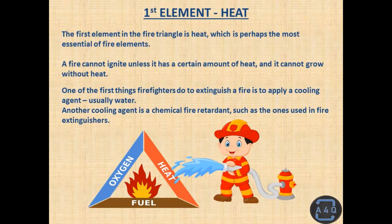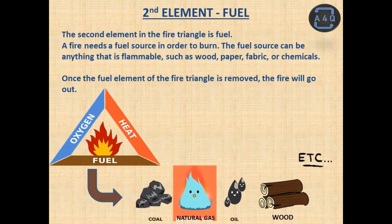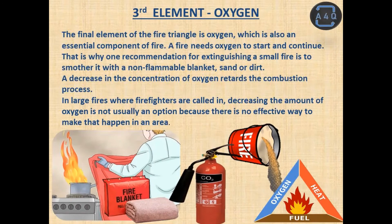Another cooling agent is the chemical fire retardant, such as the ones used in fire extinguishers. The second element in the fire triangle is fuel. A fire needs a fuel source in order to burn. The fuel source can be anything that is flammable, such as wood, paper, fabric, or chemicals. Once the fuel element of the fire triangle is removed, the fire will go out.